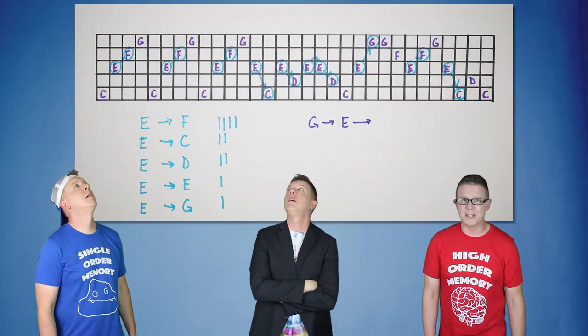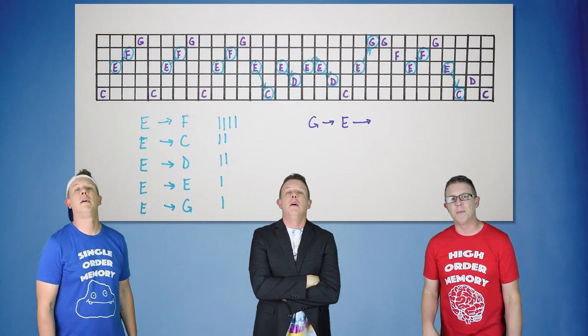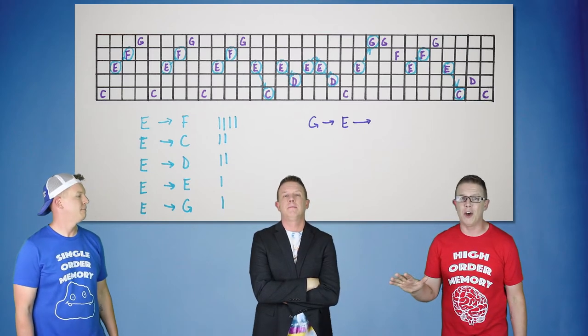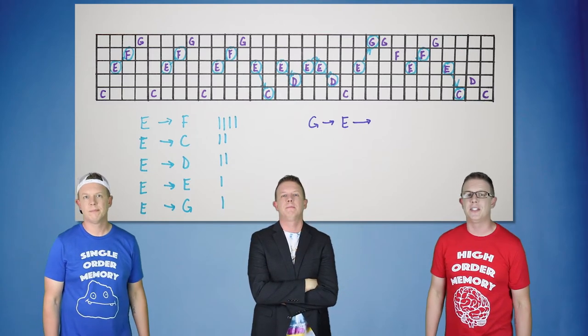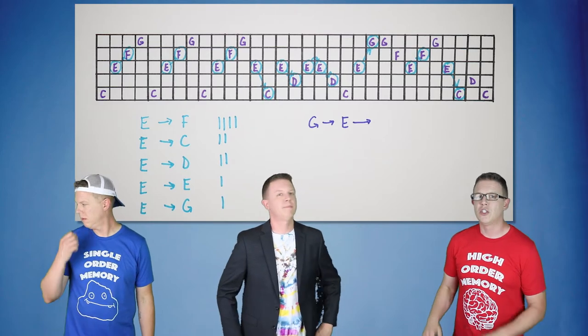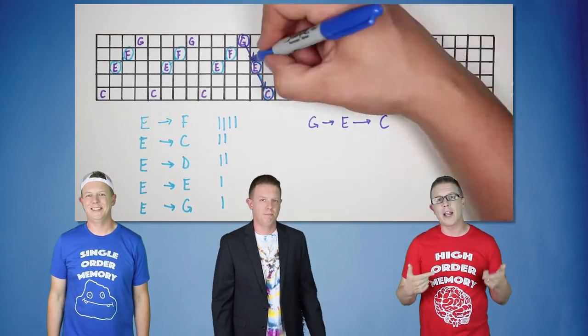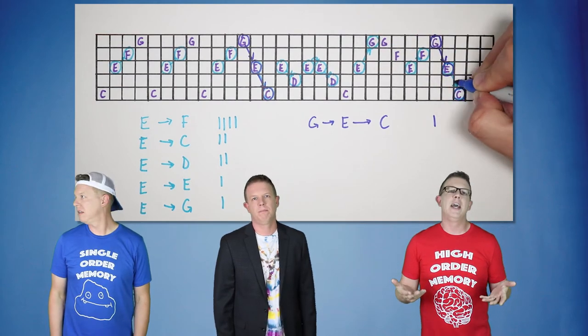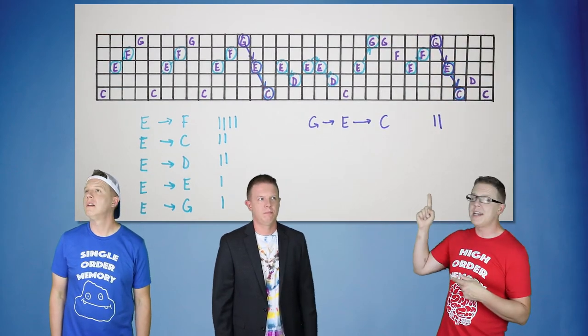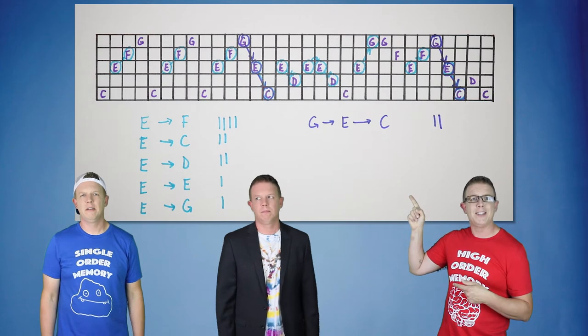That's right, Marcus from Numenta. I can solve this issue because I can remember more about the notes that led up to the current state. So I know that if a G is followed by an E, I can more accurately predict what comes next. And in this case, G and E will definitely be followed by C.